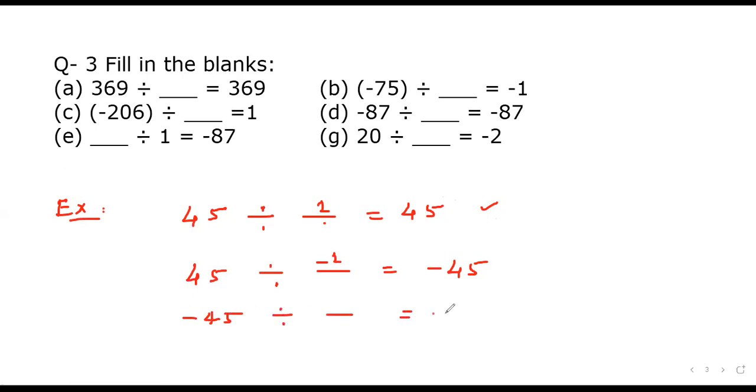And suppose minus 45 divided by something is 45. So this minus sign will disappear only when there is another minus sign, so minus 1. So this is how you can solve these questions. Thank you.